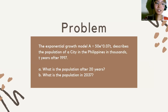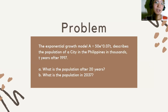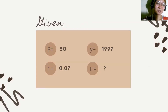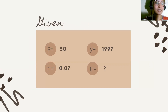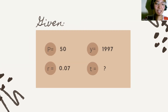We have to answer: A — what is the population after 20 years? And B — what is the population in 2037? The given values are a population of 50 thousand, a growth rate of 0.07, and a base year of 1997. We need to find the time variable.